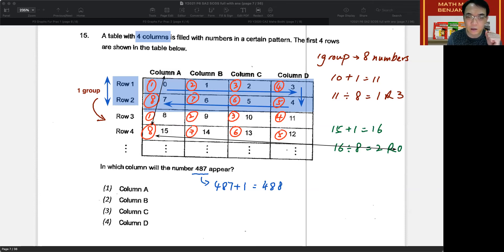So now let's apply all this knowledge to our question here, which is, what is the column in which 487 will appear? So 487 plus 1, 488, as you have already seen in the working over here. So now the next step is the same as this one. You will divide it by 8. I will now take 488 divided by 8, and I should get 61 with a remainder of 0.